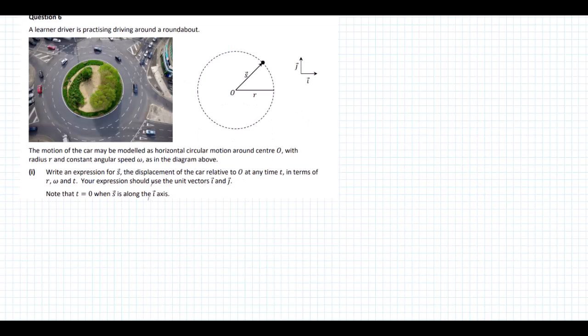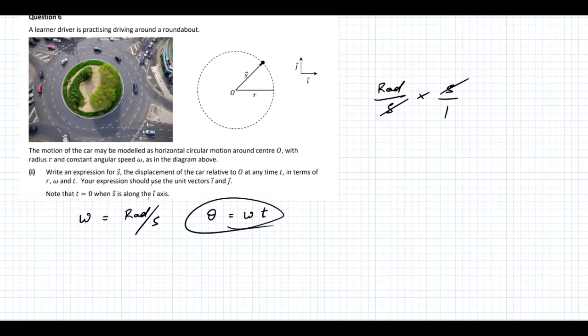We know that omega is radians per second. So our angle must be omega times T. Omega is radians per second, we're multiplying by time which is seconds, so we end up with our angle. Theta is equal to omega times T. If we take our displacement vector, we can see that it's going to look something like this when we resolve it.